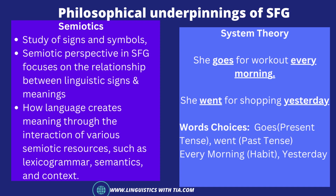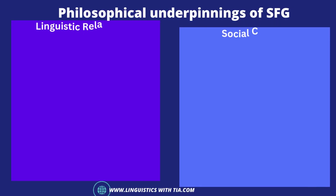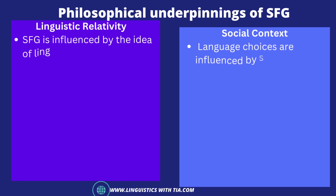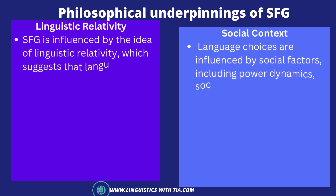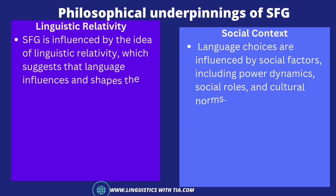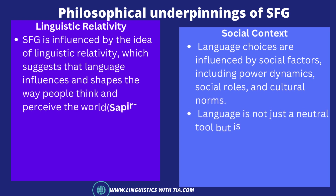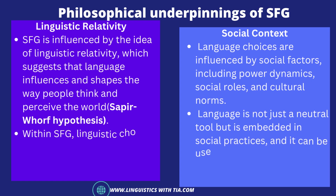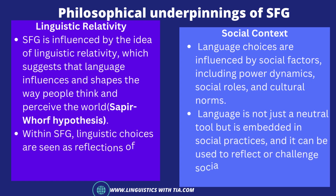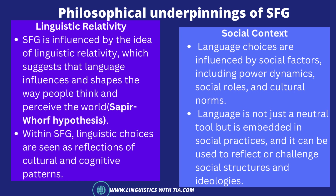Linguistic relativity also provides a basis to SFG. It is influenced by the idea that language influences and shapes the way people think and perceive the world — also known as the Whorfian hypothesis. Within SFG, linguistic choices are seen as reflections of cultural and cognitive patterns. It recognizes that different languages may be structurally different, and linguistic analysis can provide insight into how speakers of a particular language view and interact with the world around them.